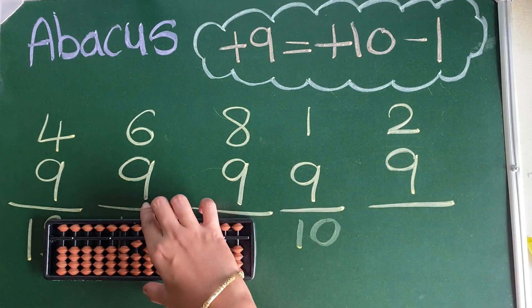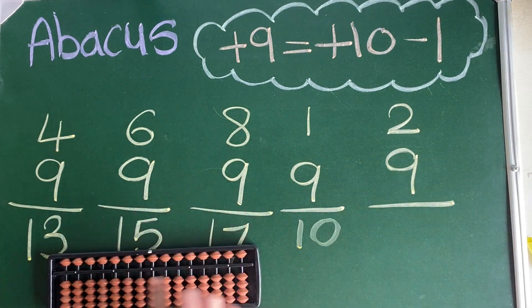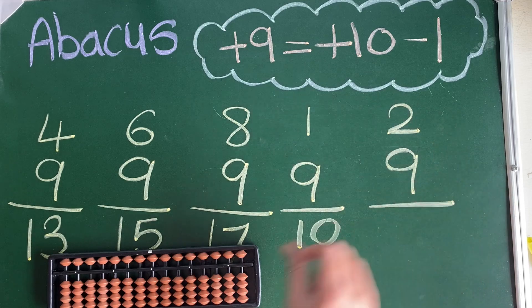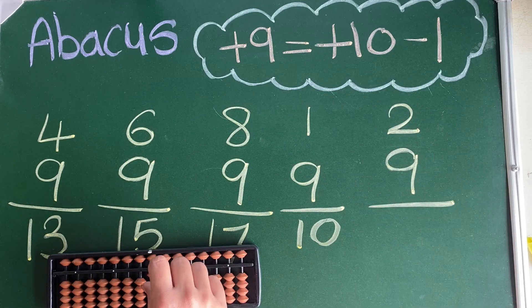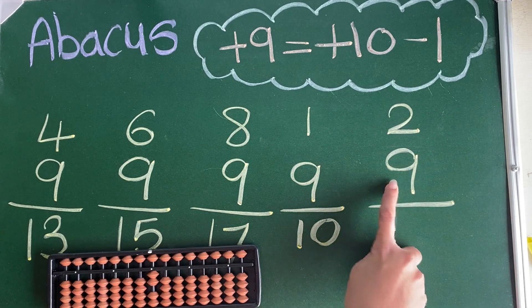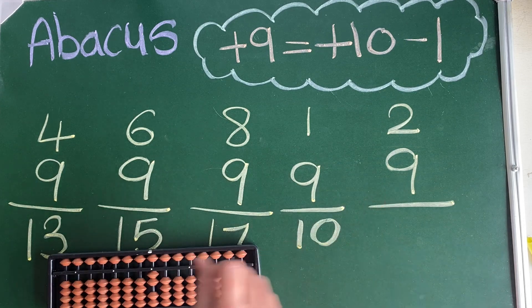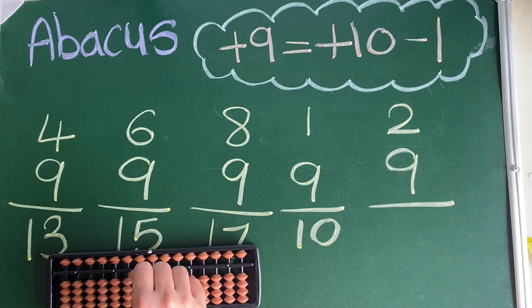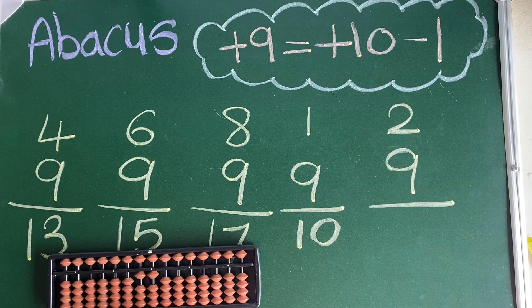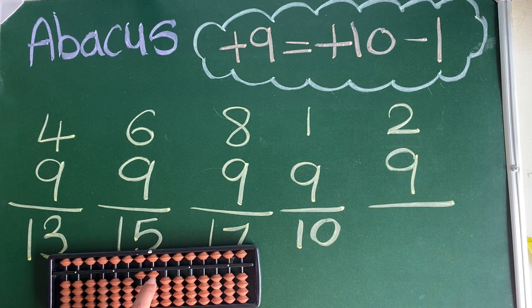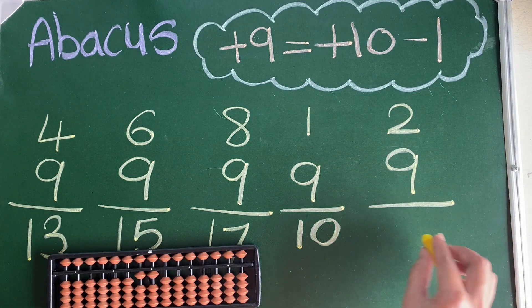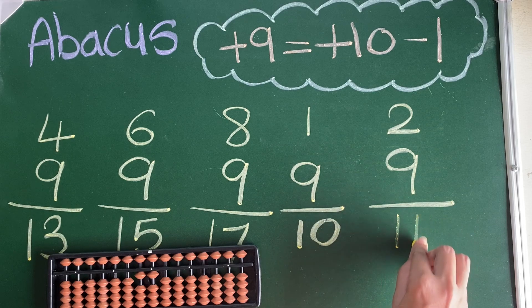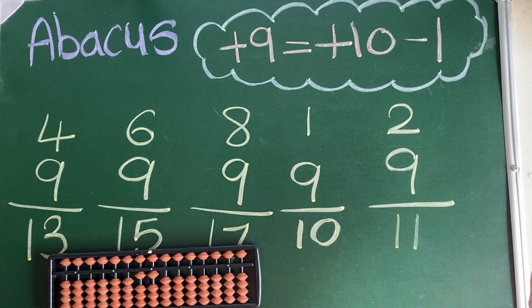Let's see our last sum: 2, 1, 2 and 9, plus 9. For plus 9, what are we going to do? Plus 10 minus 1. 10, 1, 10 and 1 is 11. Like this friends, you have to be practicing more in this.